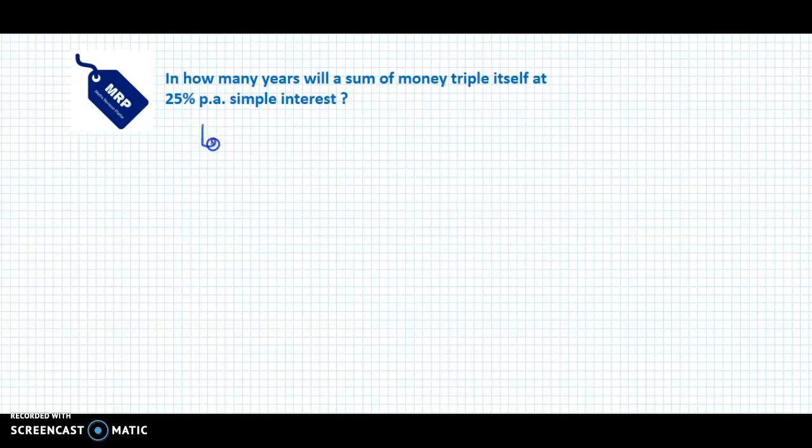So let us assume the principal or present value as x. The money triples itself, so the future value or amount would be 3x.